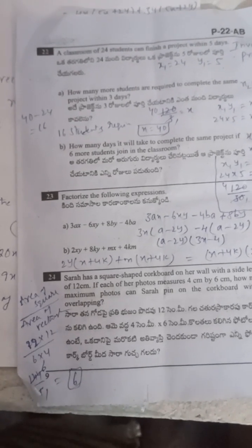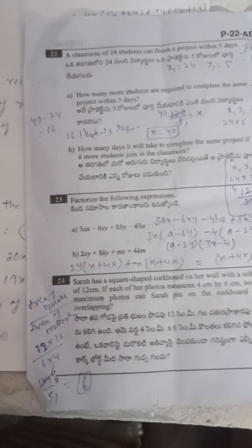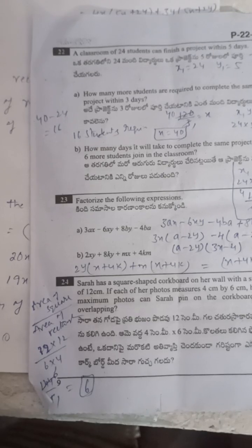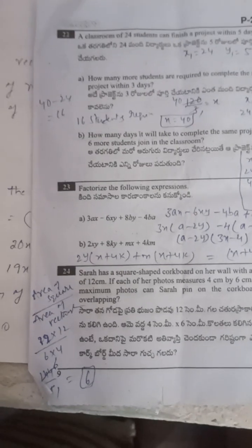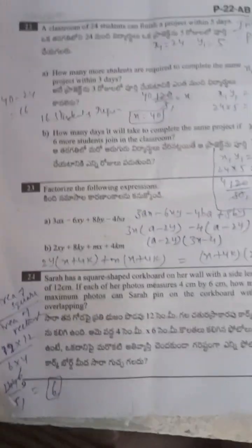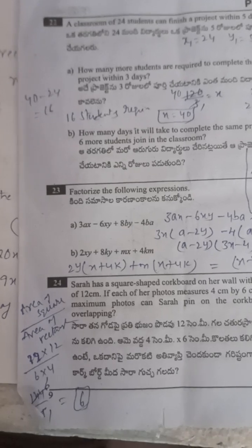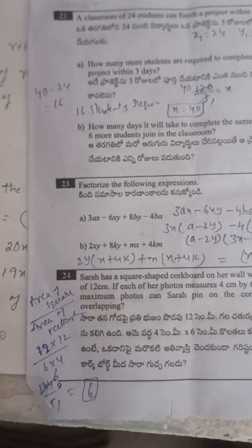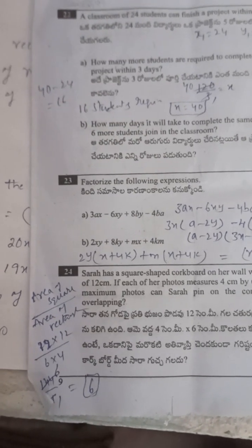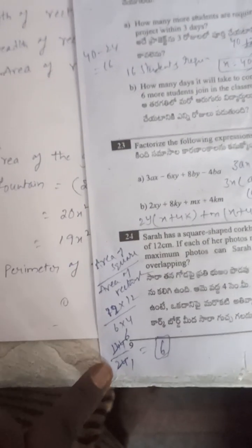Next: a crackboard is in square shape and photos are arranged in rectangle shape. Find how many photos fit. Area of square crackboard: side into side equals 12 into 12 equals 144. Area of each rectangular photo is 24. Number of photos equals 144 divided by 24 equals 6. So 6 photos fit.